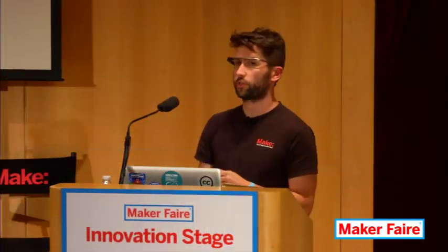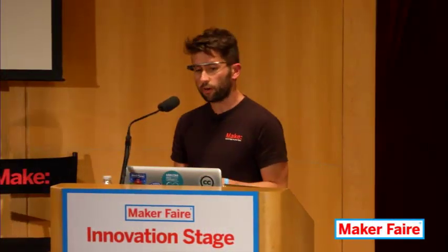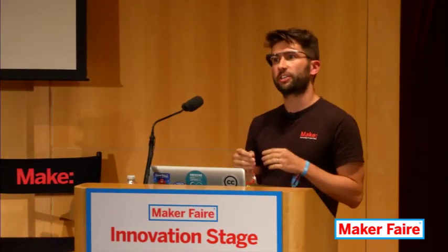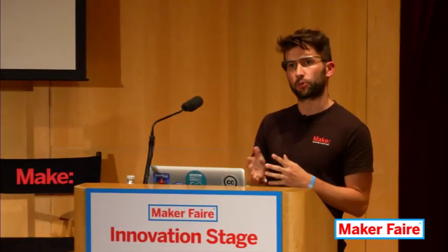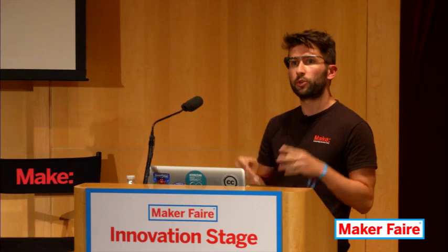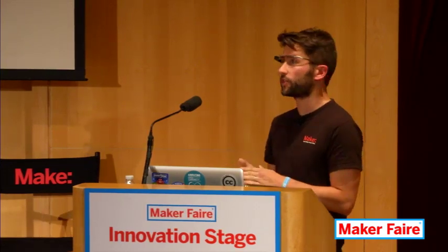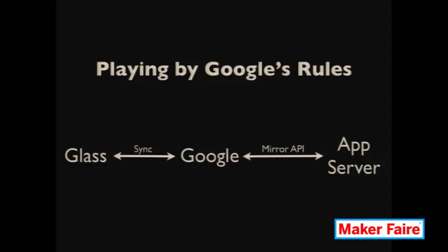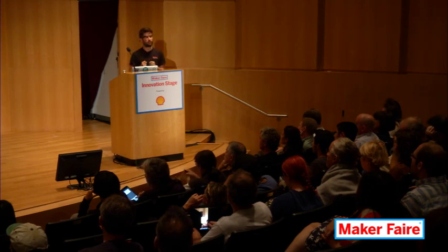There are a couple ways to do this. The first way I want to talk about is the Mirror API, which is really how you're going to develop for Glass if you're playing by Google's rules and what they want you to do. When you're developing for Google Glass, you're actually building a web server to communicate with Google servers, which your device will sync with. Everything goes through the internet, through the servers, so you're not actually building anything that's loaded up onto Glass.